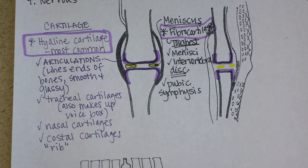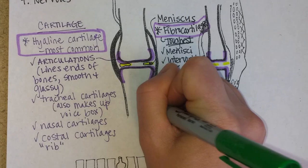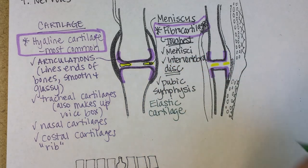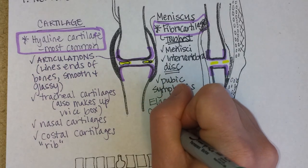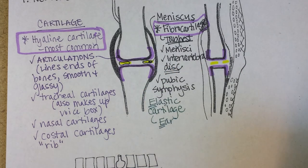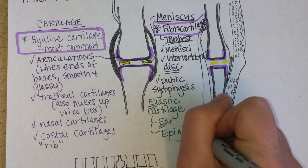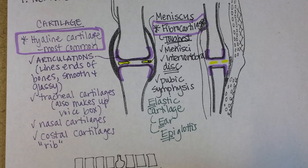The last kind of cartilage is called elastic cartilage. You can tell from the name that it is the most flexible. We find it in a flexible spot — the ear. Notice it starts with an E, just like elastic — that's how you can remember. The other place elastic cartilage is found is the epiglottis, which is a flap of cartilage that covers the opening to your trachea when you swallow, protecting you from choking.